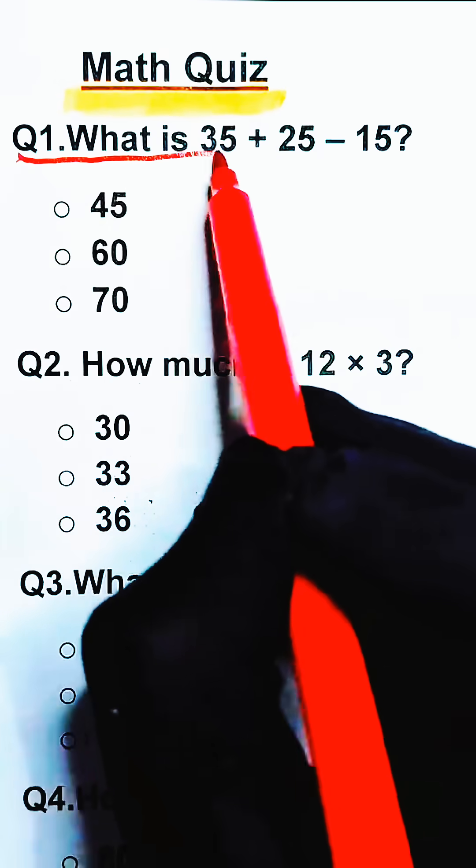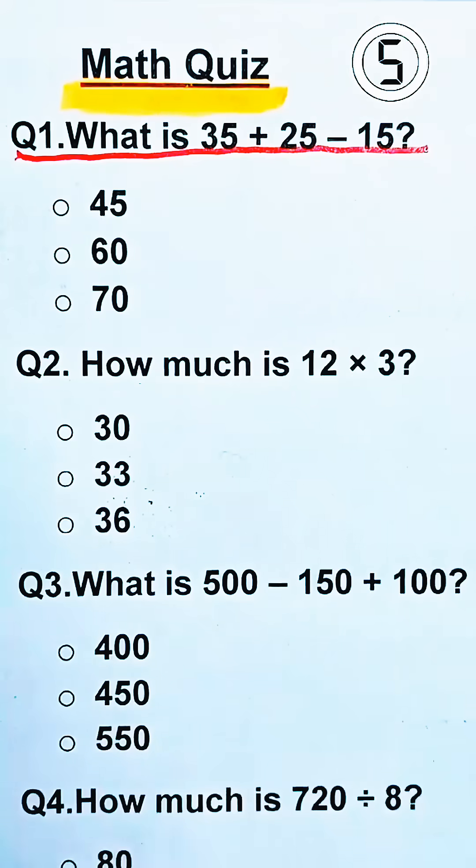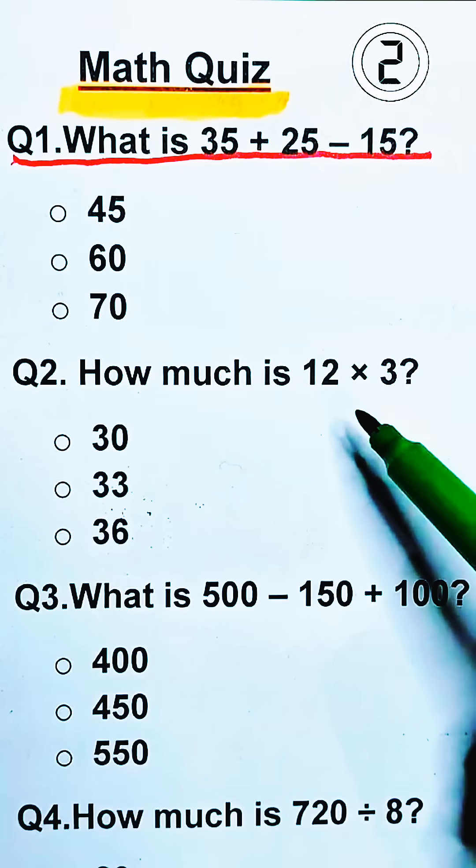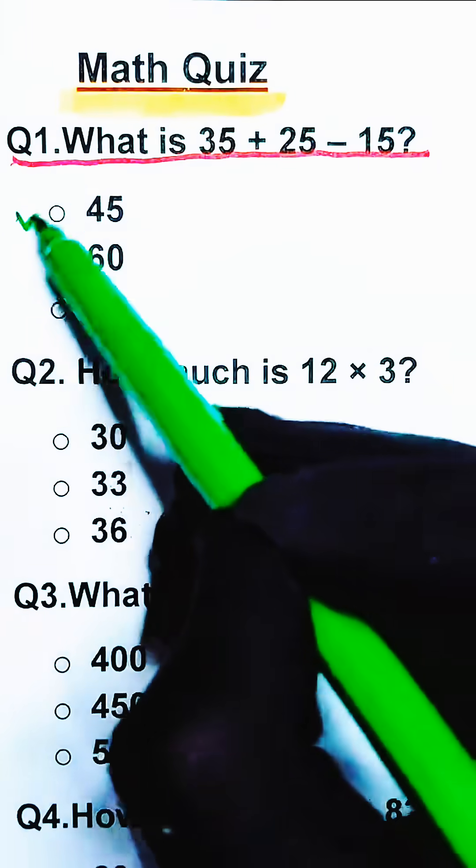Question 1. What is 35 plus 25 minus 15? The correct answer is 45.